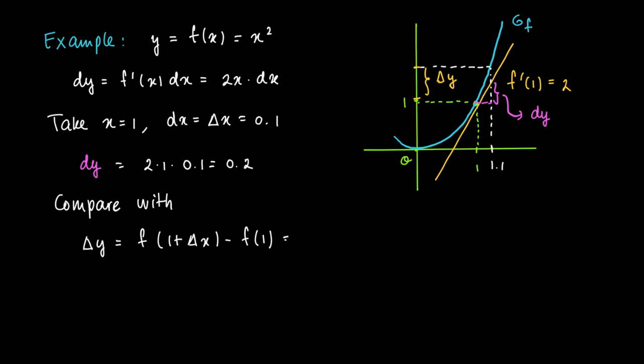And this can be calculated exactly since f(1 + Δx) = (1 + Δx)² - 1, which gives 2Δx + (Δx)², which equals 0.2 plus 0.01, which equals 0.21.